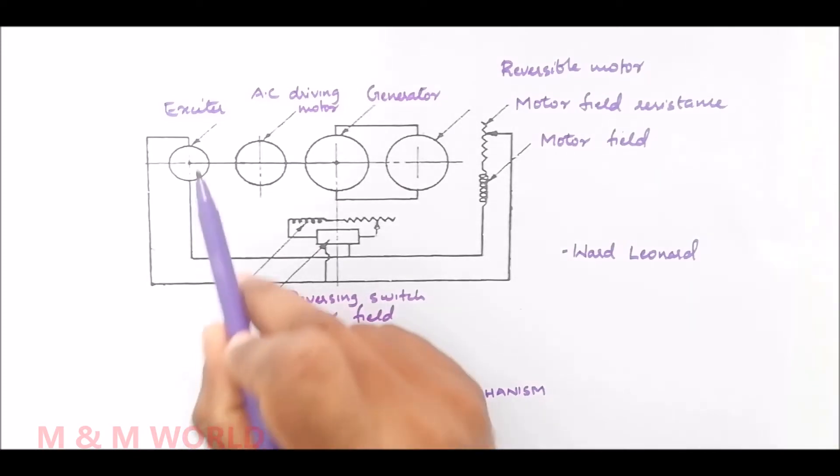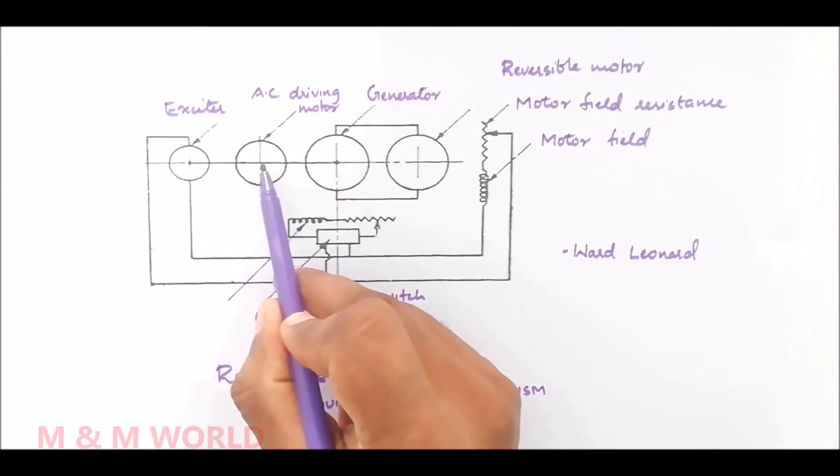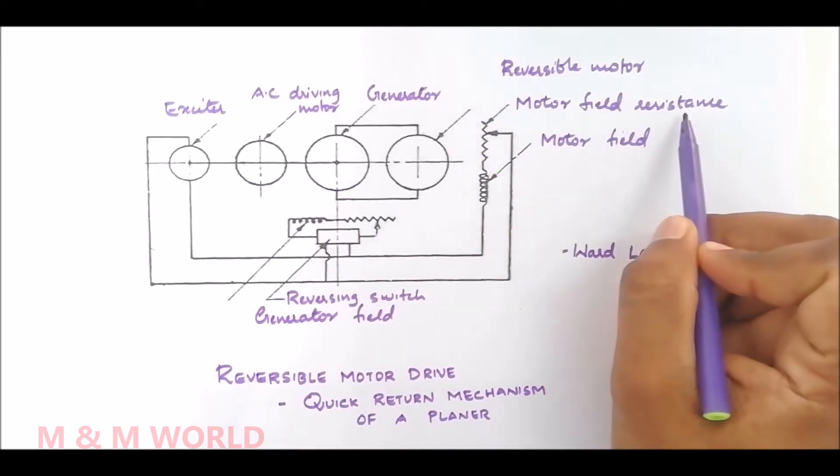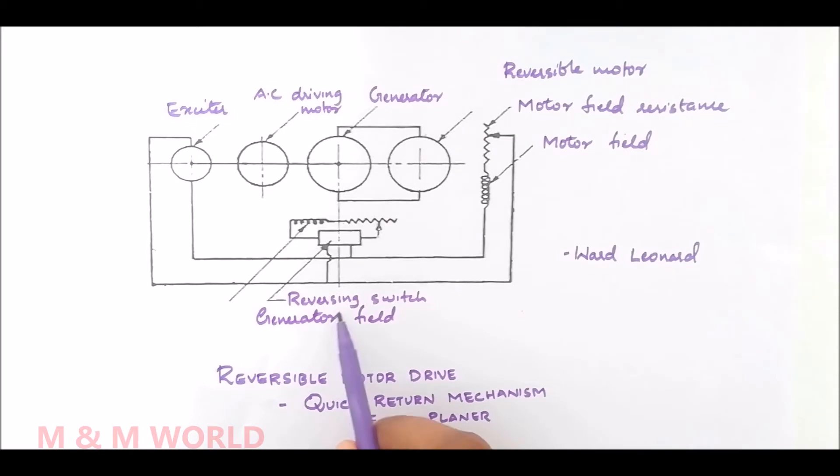Here we have an exciter, AC driving motor, generator, then a reversible motor, then motor field resistance, motor field and reversing switch and a generator field.